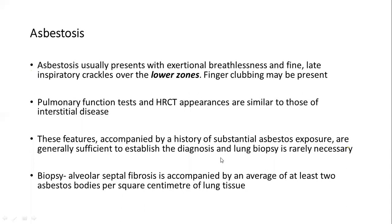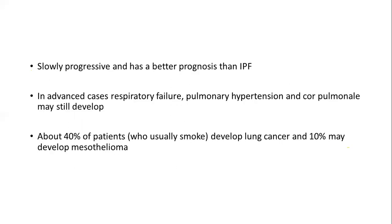In most cases, a history of substantial asbestos exposure is generally sufficient to establish the diagnosis without lung biopsy. However, if a biopsy is done, it shows alveolar septal fibrosis accompanied by an average of at least two asbestos bodies per square centimeter of lung tissue. Asbestosis is slowly progressive but has better prognosis than idiopathic pulmonary fibrosis. In advanced disease, patients may develop respiratory failure, pulmonary hypertension, and cor pulmonale. About 40% of patients — especially smokers — develop lung cancer, and 10% may develop mesothelioma.